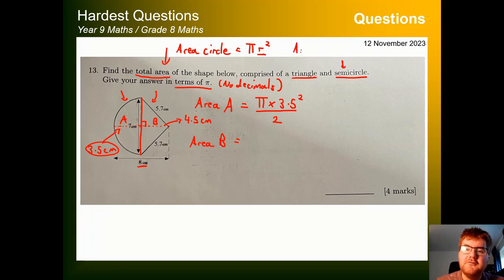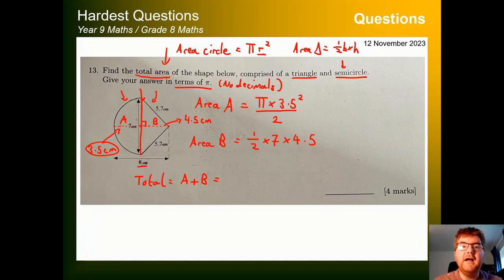Now we know these things. The area of a triangle, generally speaking, is a half base times height. So what we can do here then, a half times the base, that's going to be our 7 here, and then multiply by the height, that's going to be 4.5. So to work out the total area here, we're going to combine together A and B. And this is where I will go to the calculator because calculator is very clever. It can actually convert these things in terms of pi.